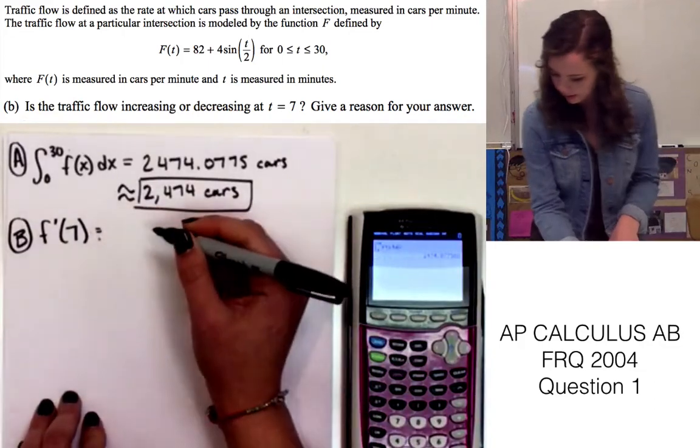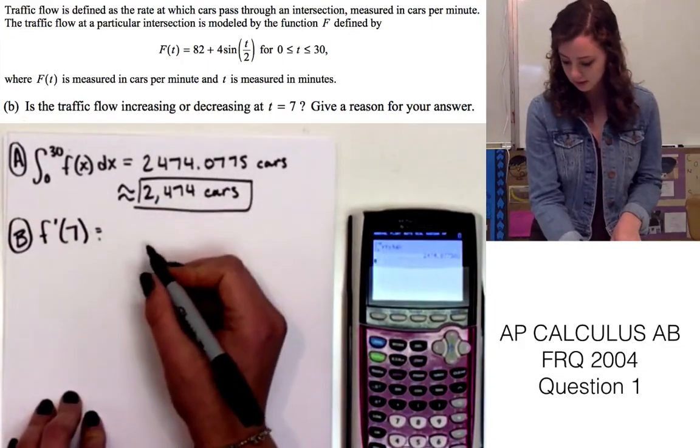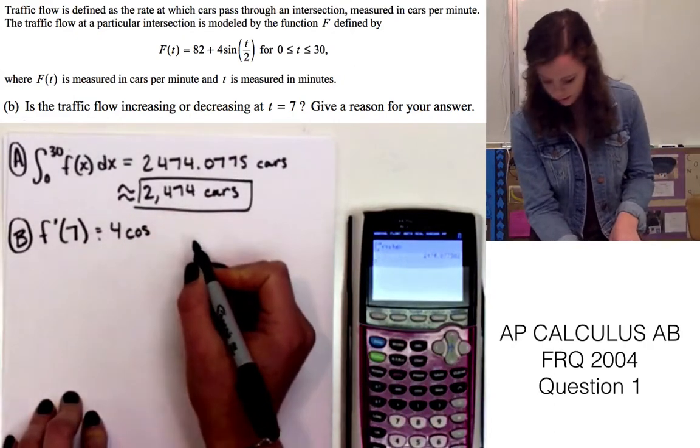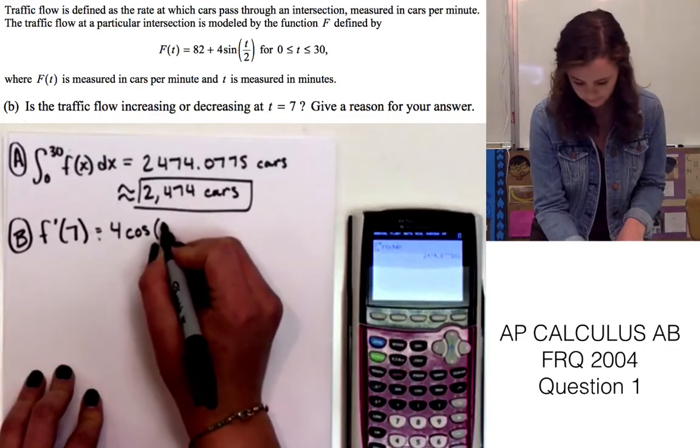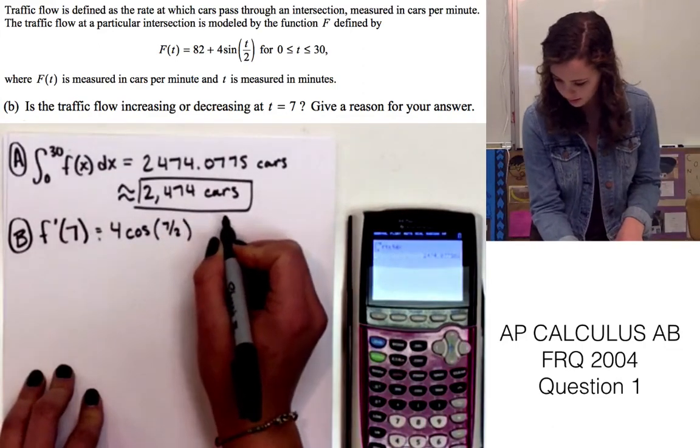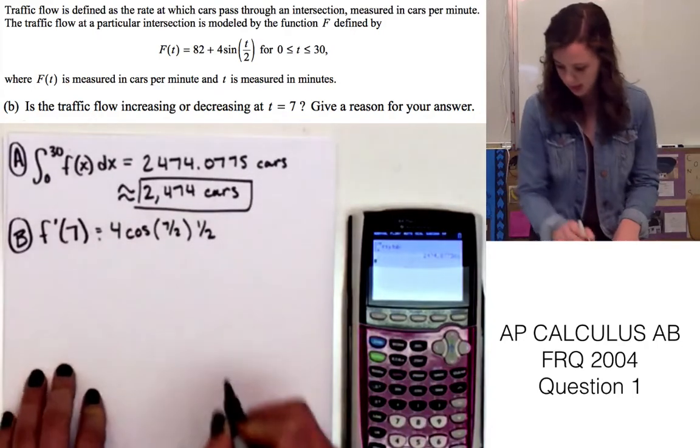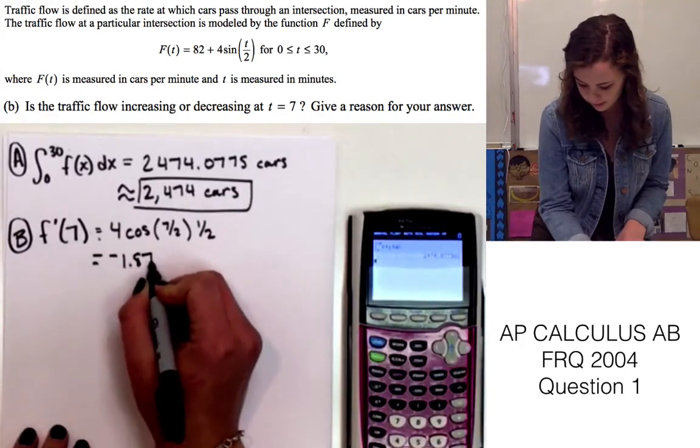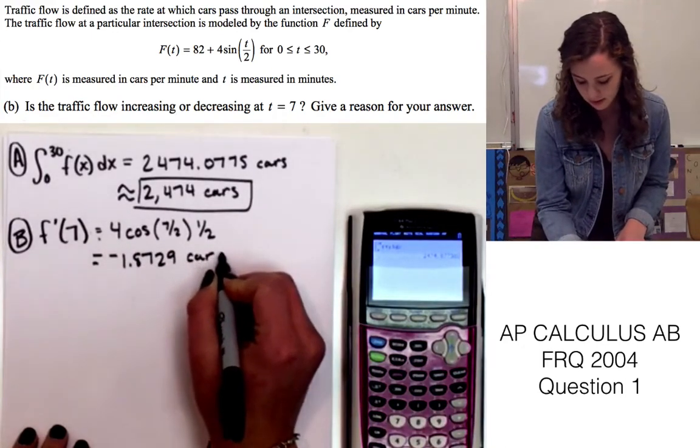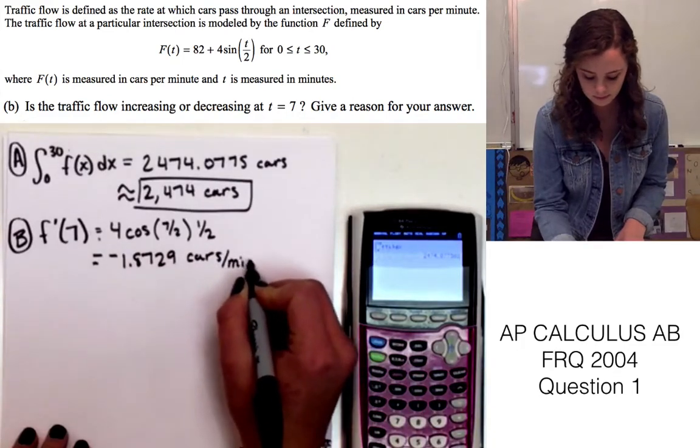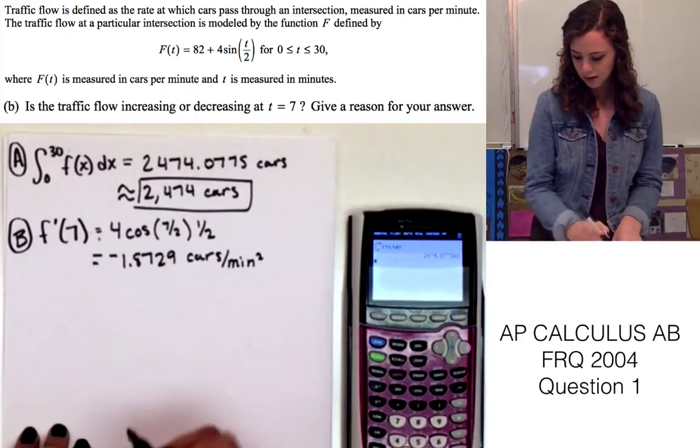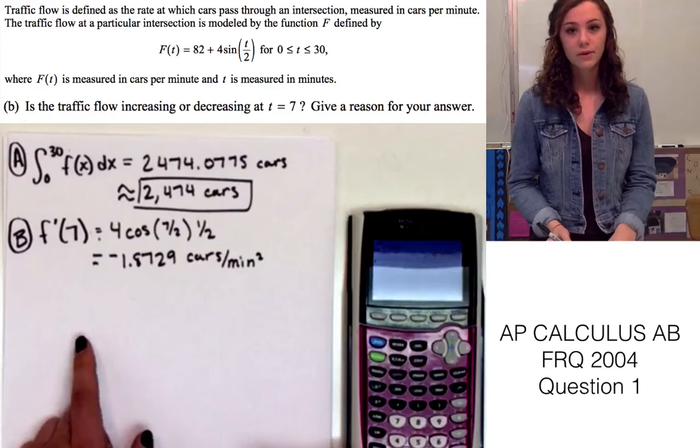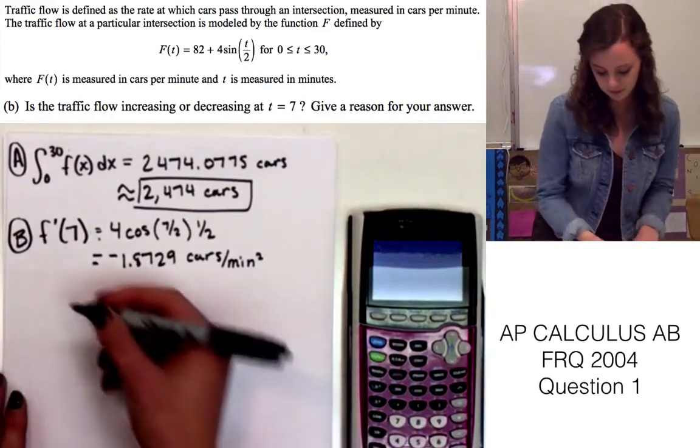So the derivative of f(x) is 4 cosine, and I'll plug in 7. So 4cos(7/2) times 1/2. And that is equal to negative 1.8729 cars per minute squared. And because that's a negative number, we know that the traffic flow is going to be decreasing at t = 7.